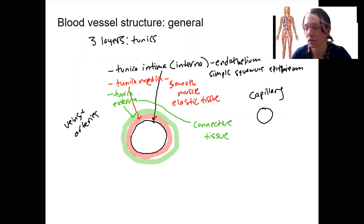So these are the three layers that make up blood vessels. The compositions differ in different blood vessel types. The extreme of that is capillaries, which only have that endothelium.